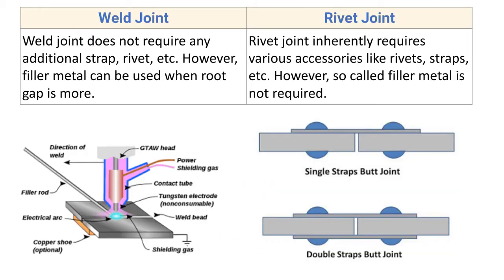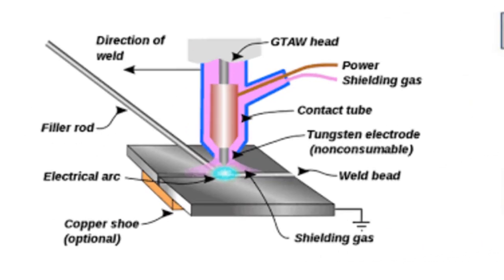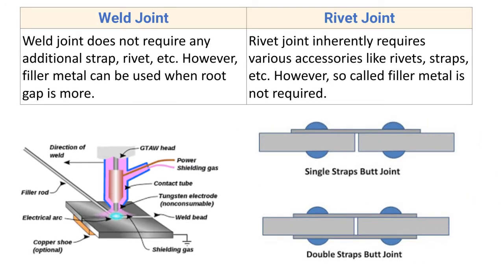Weld joint does not require any additional strap, rivet, etc. However, filler material can be used when the root gap is more. Here you can see the GTAW process, where an arc is generated between the electrode and the workpiece and a filler rod is optionally used. When filler rod is used, the welding is known as homogeneous or heterogeneous welding; without filler rod it is called autogenous welding.